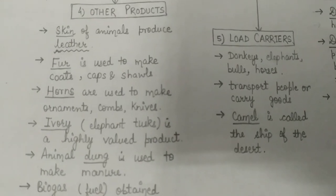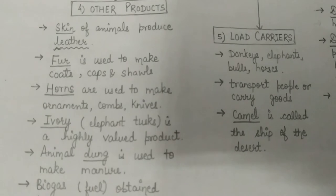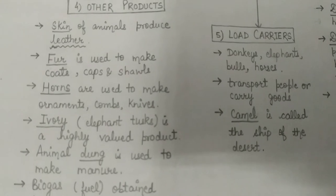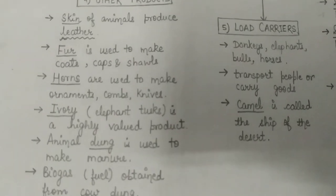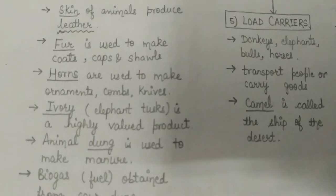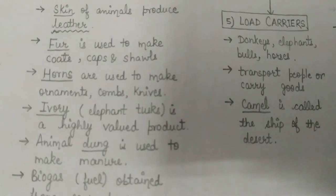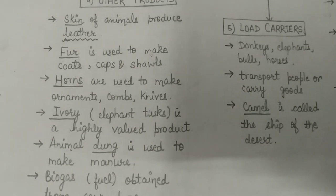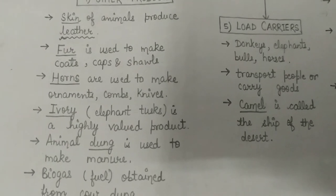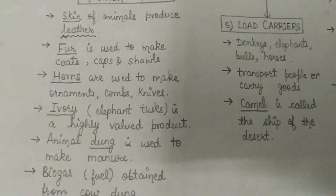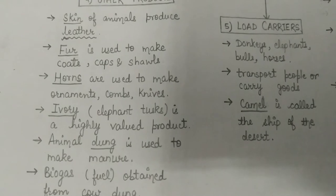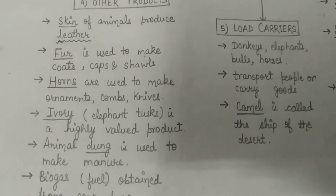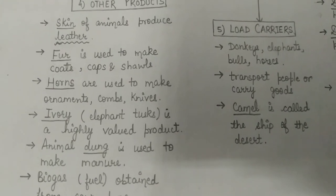We use leather in all these things — shoes, bags, belts, jackets — and we get leather from the skin of animals like buffaloes, cows, camels, and sheep. Next is fur. Fur is obtained from the hair of animals such as rabbits, foxes, and squirrels, and it is used in very cold countries.